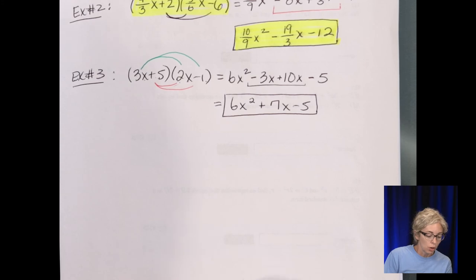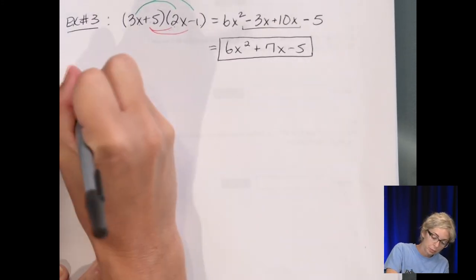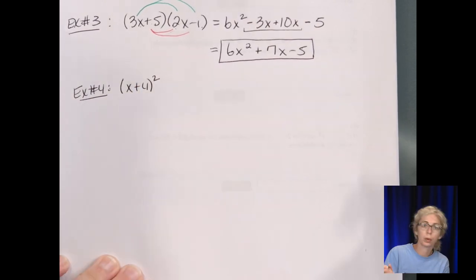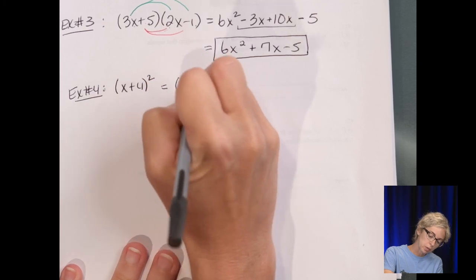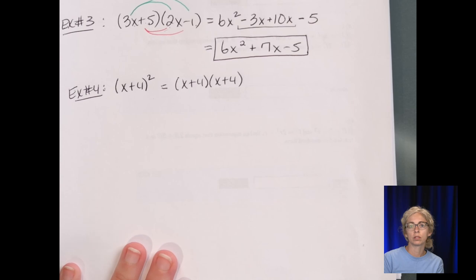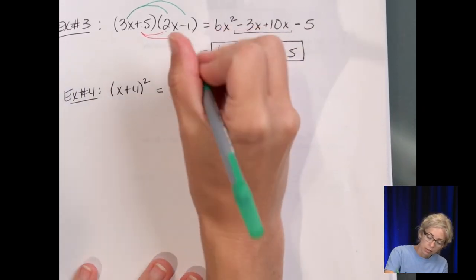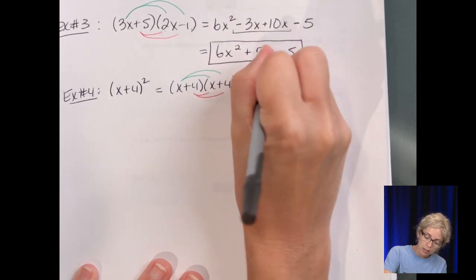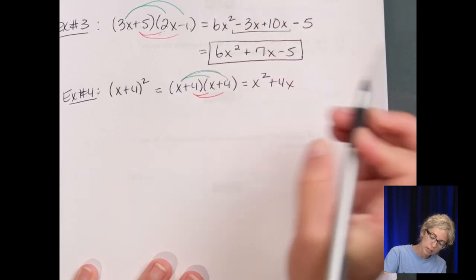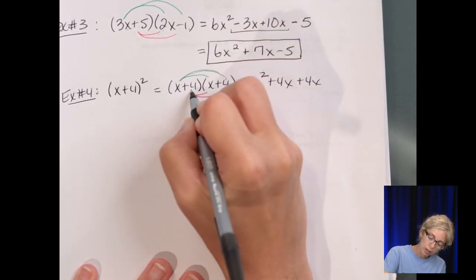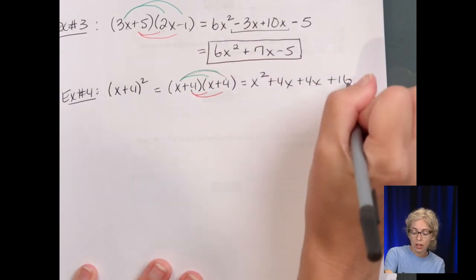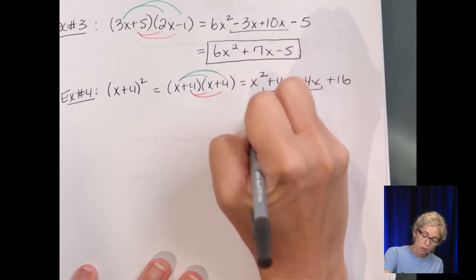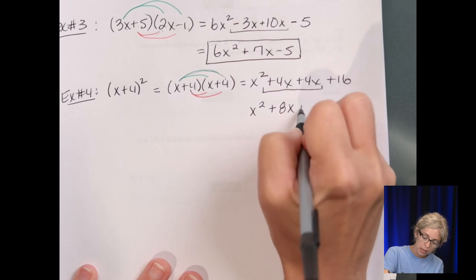Example number 4: we're going to look at the square of a binomial. So (x plus 4) squared means we take x plus 4 and multiply it times itself. Distributing: x times x is x squared; x times positive 4 is positive 4x; positive 4 times x is positive 4x — these two middle terms are identical, as expected when squaring a binomial. And positive 4 times positive 4 is positive 16. Combining, our final answer is x squared plus 8x plus 16.